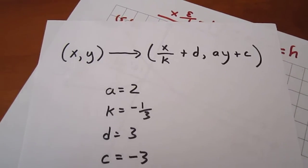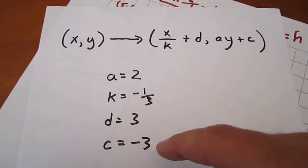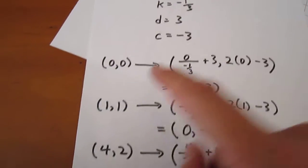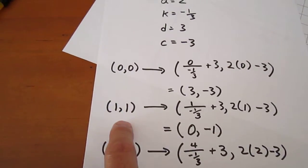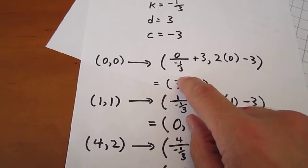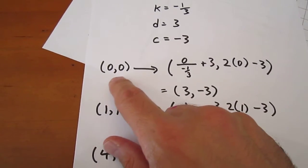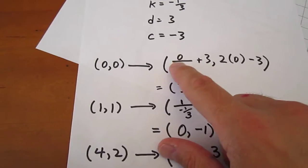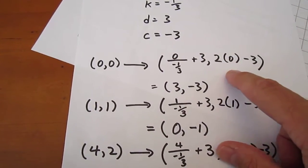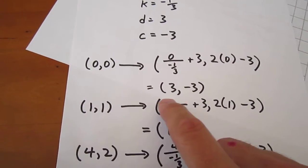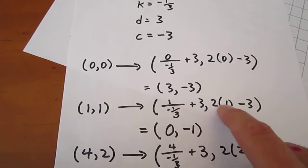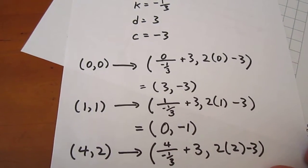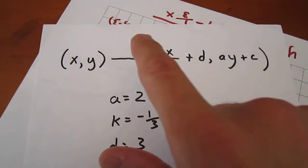Well, we already know our a, k, d, and c values. So we take our original points on the parent function, and we put them through the machine. 0, 0 has an x value of 0 and a y value of 0, so we sub those in for the x and y values. 1, 1 has an x value of 1 and a y value of 1, so we sub those in for the x and y values, still using this machine.